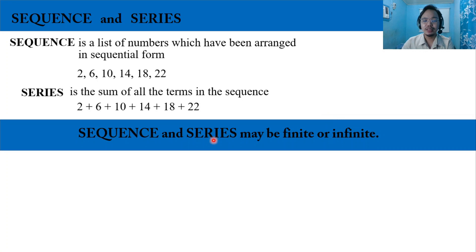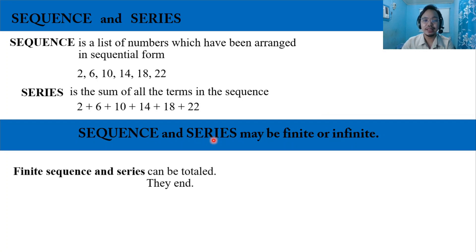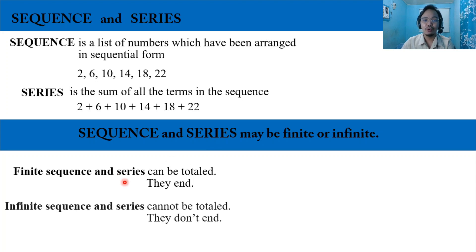Sequence and series may be finite or infinite. When we say finite sequence and series, it can be totaled or they have an end. While the infinite sequence and series cannot be totaled and they do not have an end.